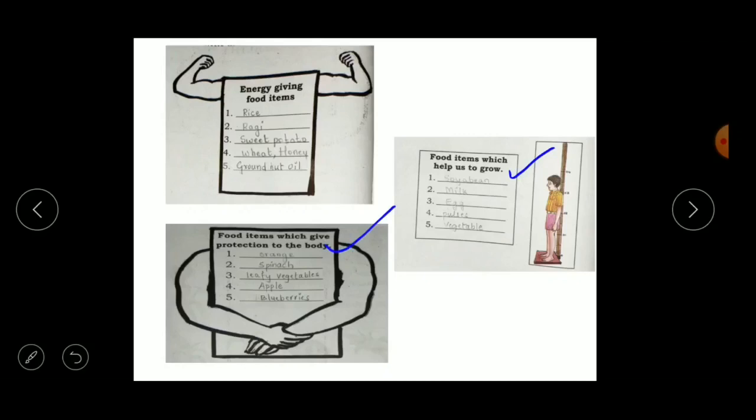The first category is energy-giving food items. These include rice, ragi, sweet potato, wheat, honey, groundnut, and oil. These food items provide energy to our body.